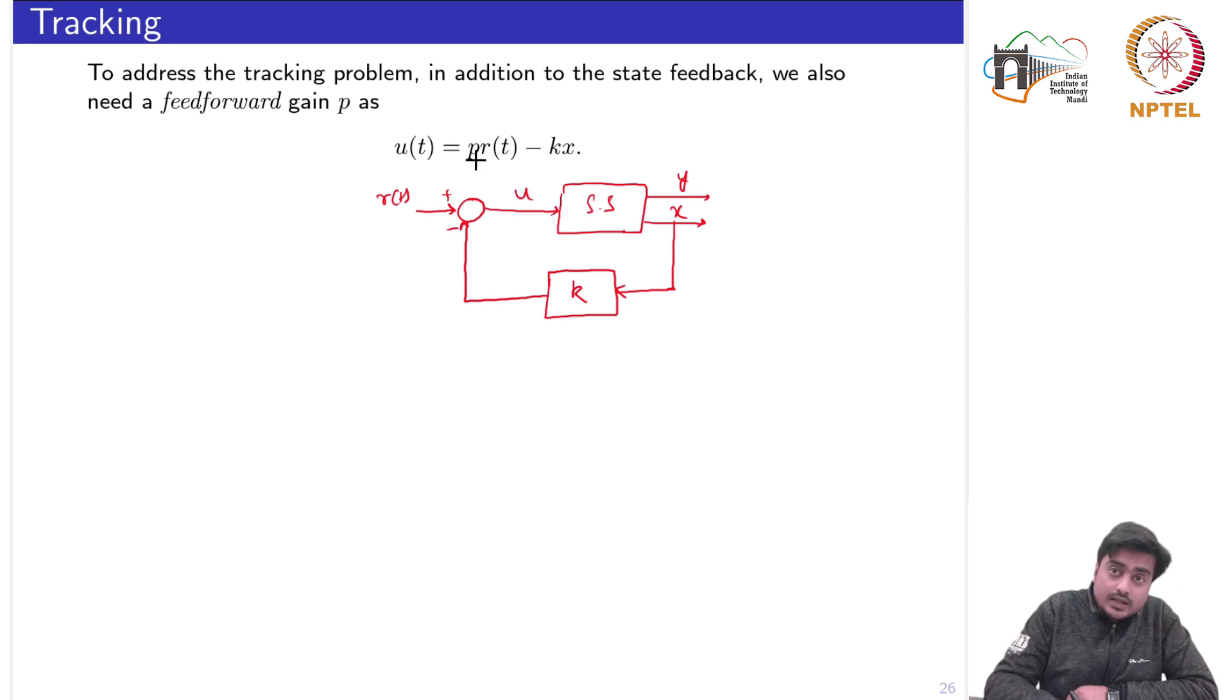But here we have also introduced another degree of freedom by p which would turn into another gain p by a reference signal. Now we have two degree of freedom for the designing of the controller, one is the state feedback gain k and another is this p.